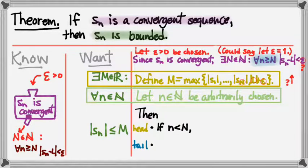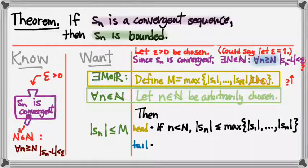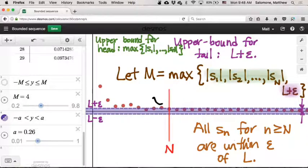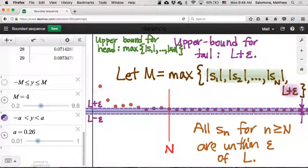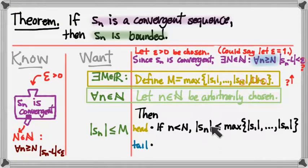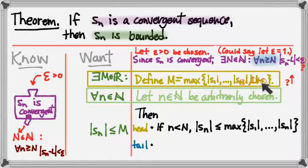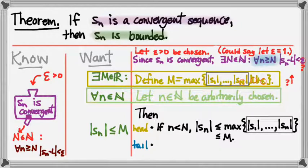Case 1: if n < N, meaning n indexes a term in the head of the sequence, then |Sn| is the absolute value of one of those head terms. Therefore it's bounded by the maximum of the absolute values of all the head terms — the green upper bound from our intuition. So |Sn| ≤ max{|S1|, ..., |S_{N−1}|}, and that max is less than or equal to M since M is the maximum over this same set plus one more possibility. So for head terms, |Sn| ≤ M.